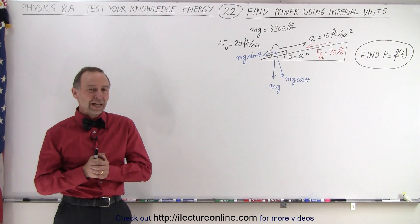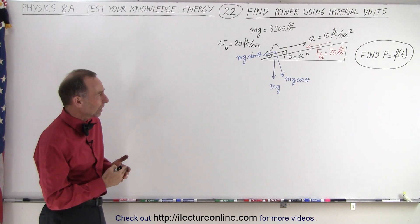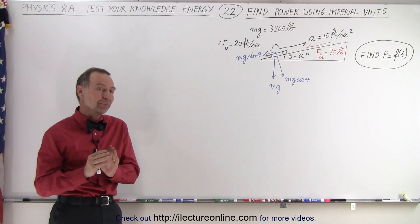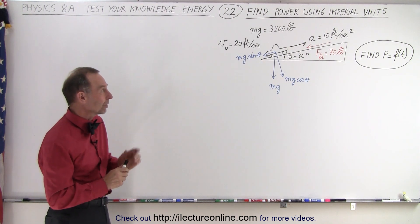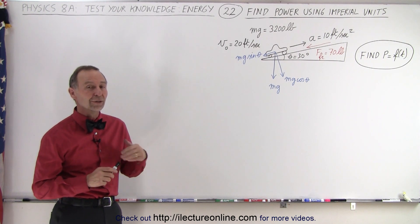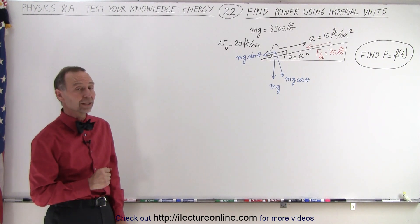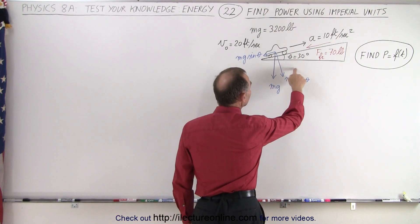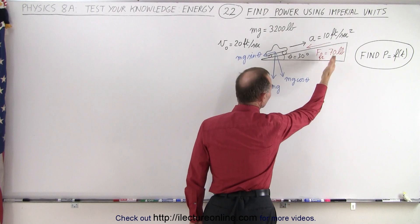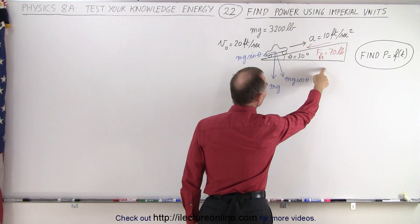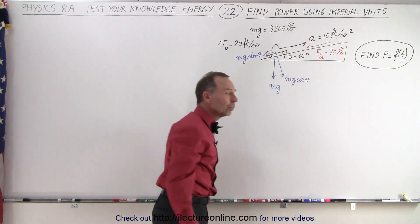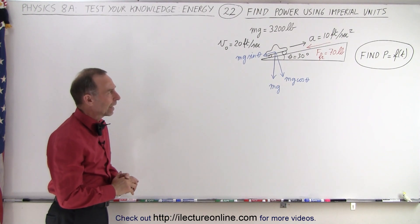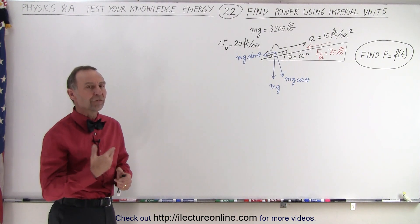Welcome to our lecture online. At first sight you may say haven't we done something like this before, and the answer is well kind of, but not exactly, because in this case the car is also accelerating up the hill. So not only do we need to work to get the car up the hill, we need to overcome friction — in this case a constant friction force of 70 pounds — and we also need to accelerate going up the hill. We're supposed to find the power as a function of time.